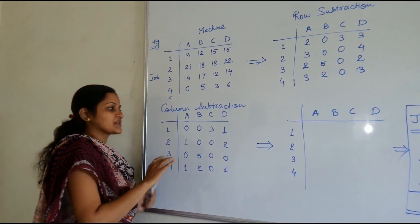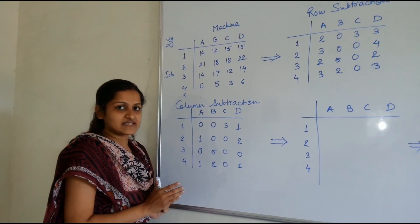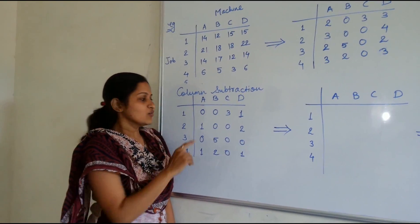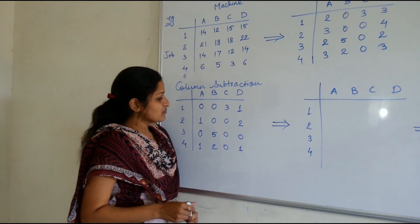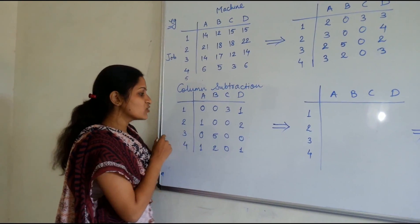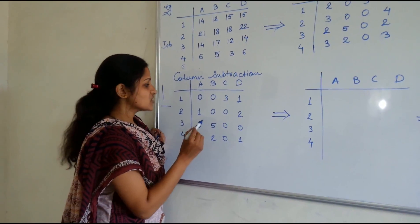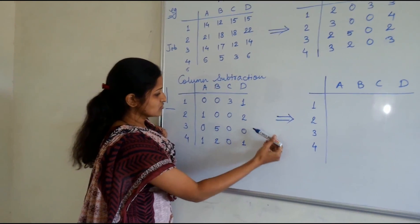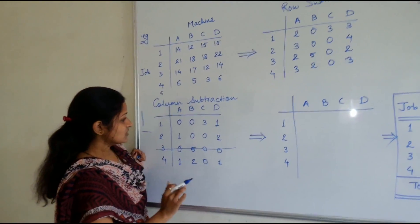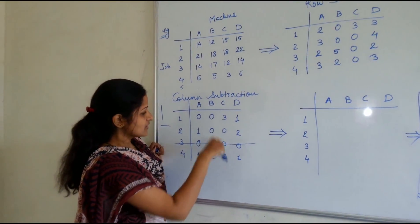After row subtraction and column subtraction, whatever matrix you get is known as your reduced matrix. The next step is to draw the minimum number of lines that will cover all the zeros — forget about the other figures, and those lines should be only vertical or horizontal. Here there are 2 zeros in this row, 2 zeros in this row, and 3 zeros in another row. Wherever maximum zeros are, cover that first. After drawing one line, check again: 2 zeros, 2 zeros, 1 zero. Going column-wise: 2, 2, 1.